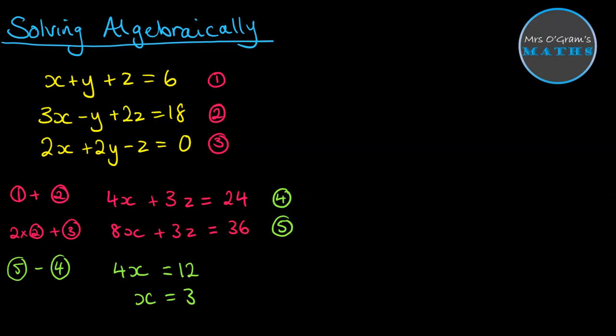Now, once we've got what x is, we can pop it back into either equation four or five to work out z. So if I substitute into equation four, then we get that we've got four times three. Let me just type that up. Four times three plus three z equals 24. So z must be four.